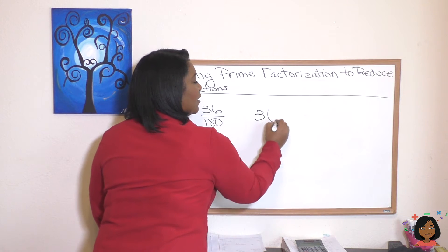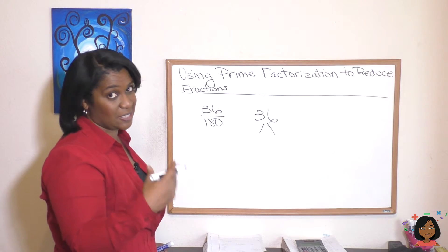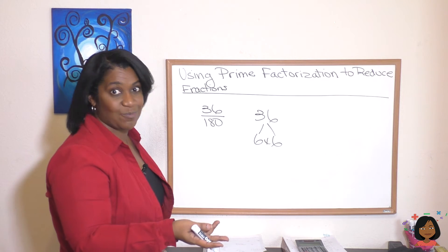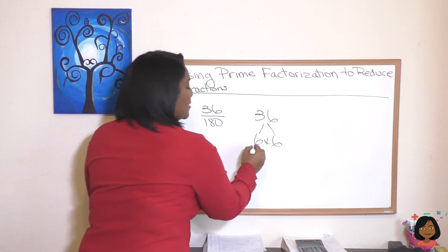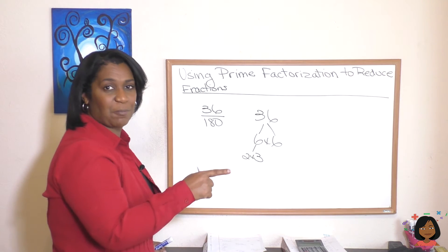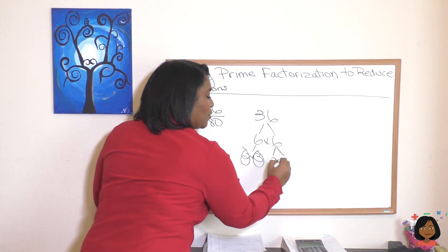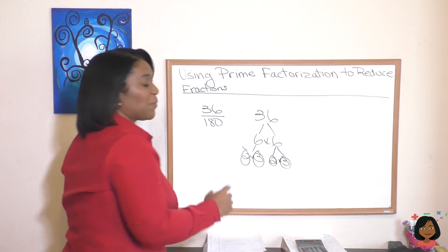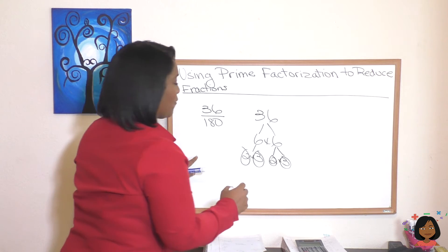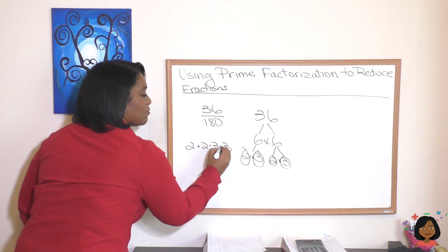Let's start with 36. I just like to pick numbers to start, so I think 36 — I think 6 times 6. So I'm going to write 6 times 6. Now is 6 prime? No, so we have to keep going. But 6 is 2 times 3, and 2 and 3 are prime, so we're done. So I'm going to write the prime factorization: 2 times 2 times 3 times 3.